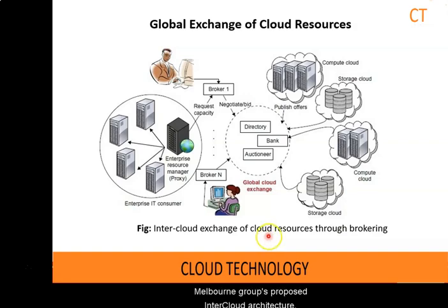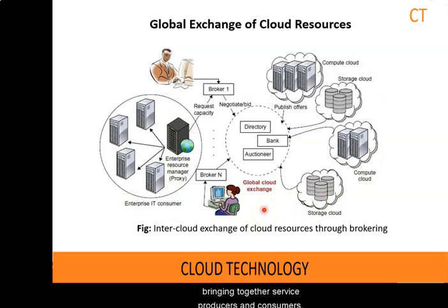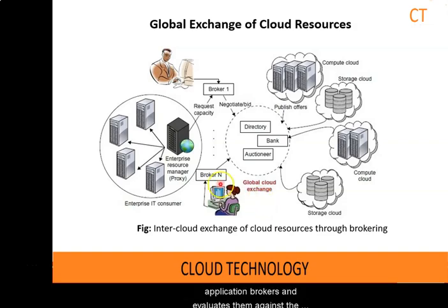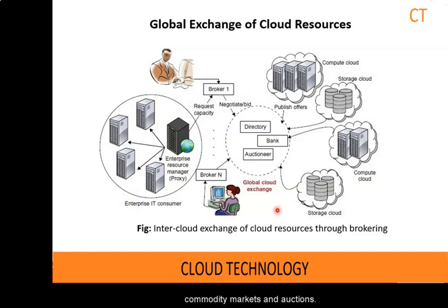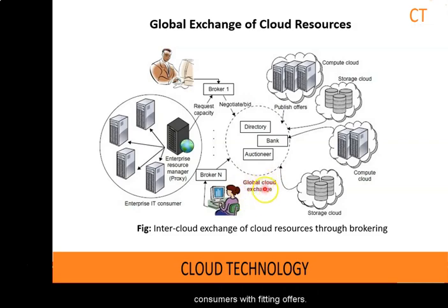This diagram shows the high-level components of the smartphone group's proposed inter-cloud architecture. The cloud exchange acts as the market maker for bringing together service producers and consumers. It aggregates the infrastructure demands from application brokers and resolves them against available supply currently published by cloud coordinators. It supports the trading of cloud services based on competitive economic models such as commodity markets and auctions. Cloud exchange allows the participants to locate providers and consumers with fitting offers.